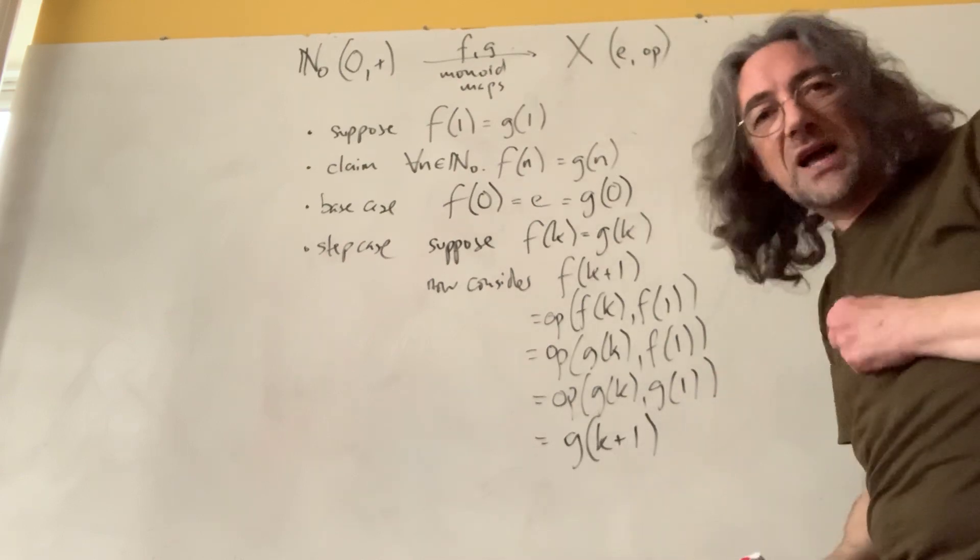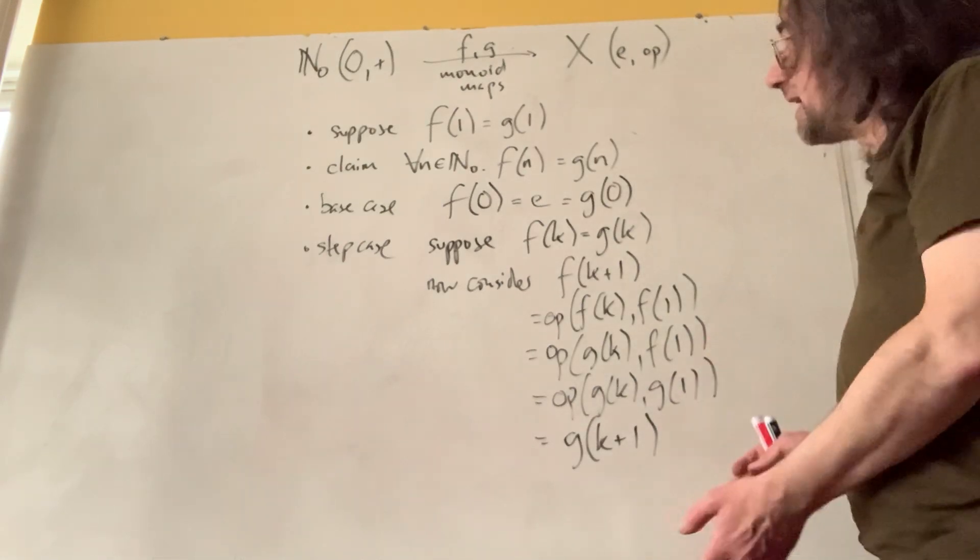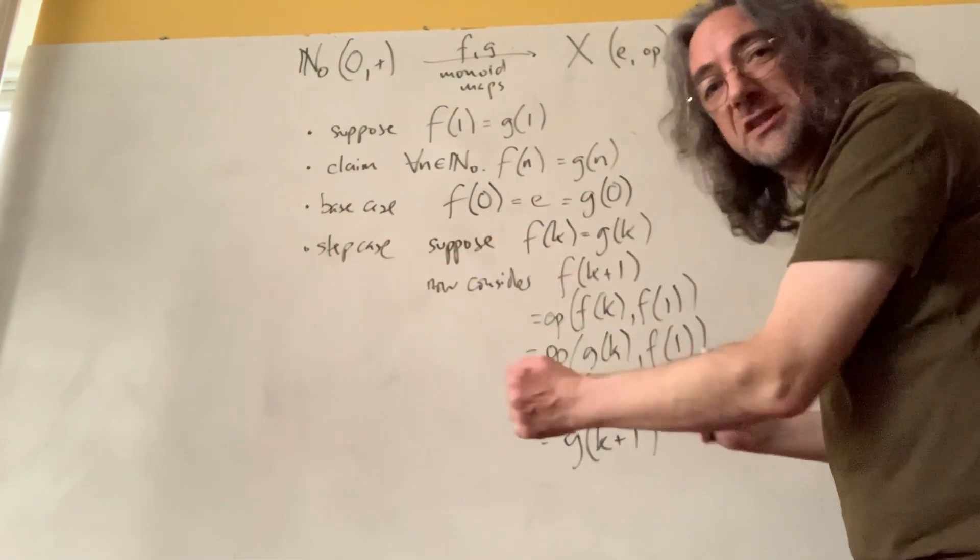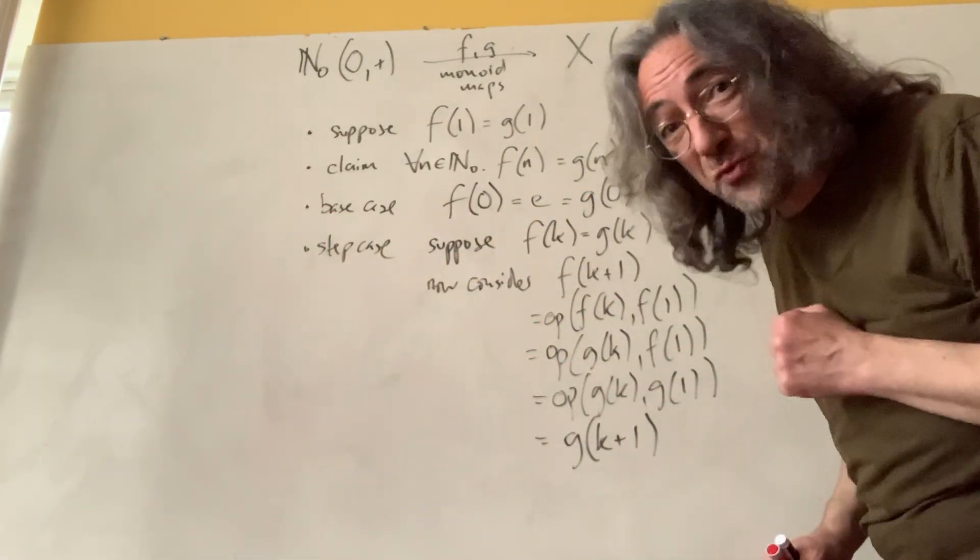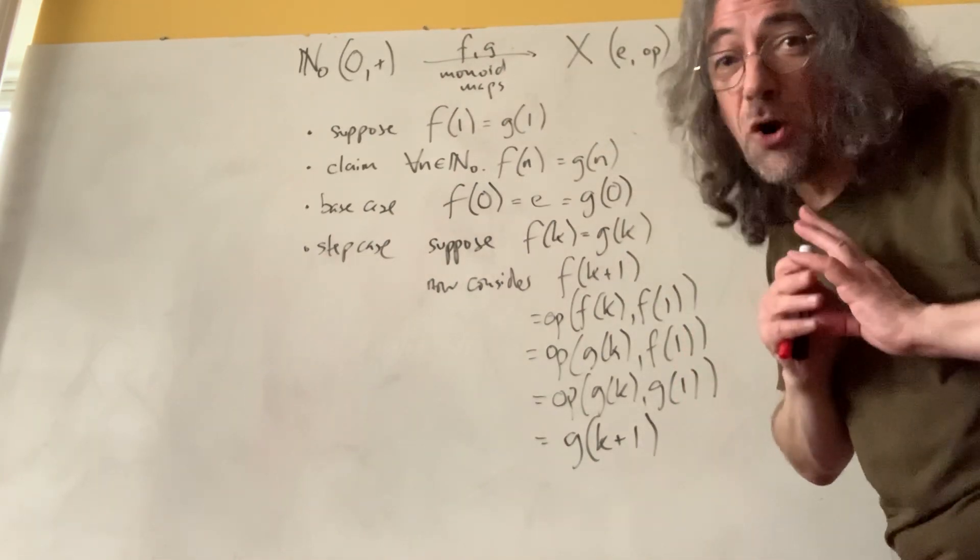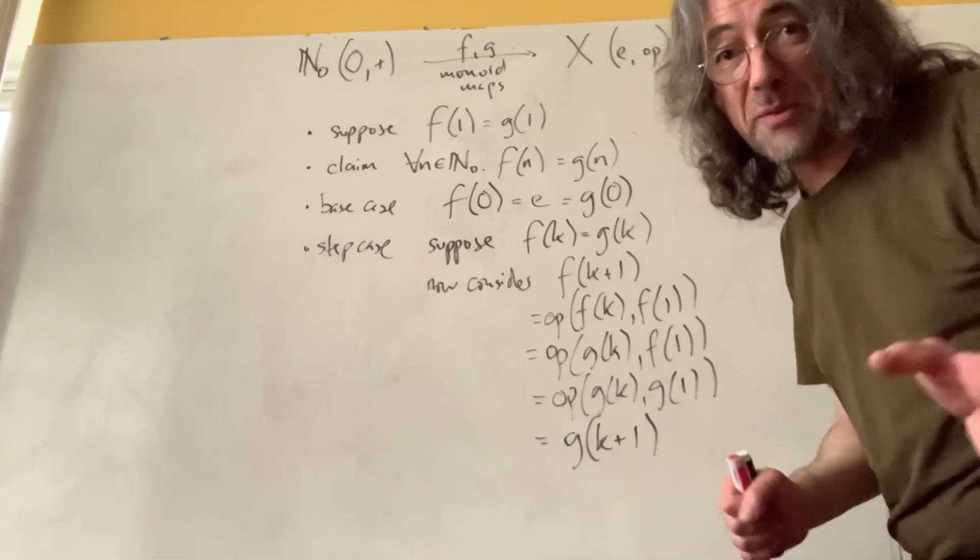So that tells us that the recipe we had earlier for taking n copies of f of 1 and squidging them together is not only a good recipe for making monoid maps, it's the only recipe for making monoid maps.